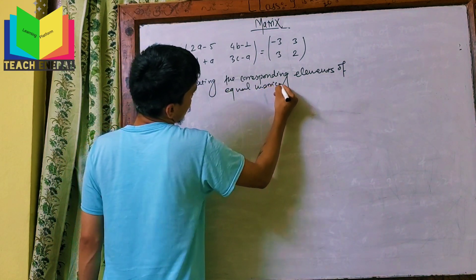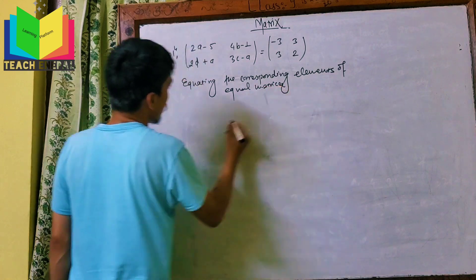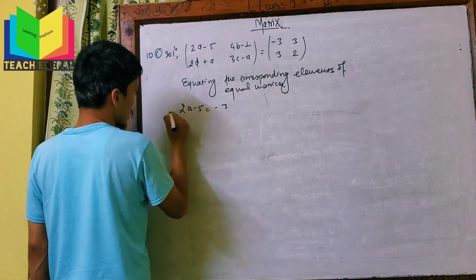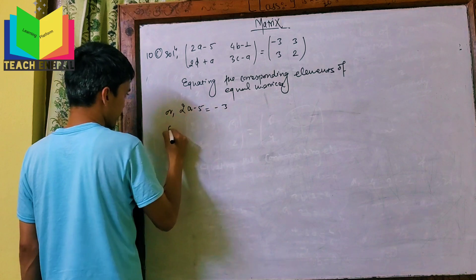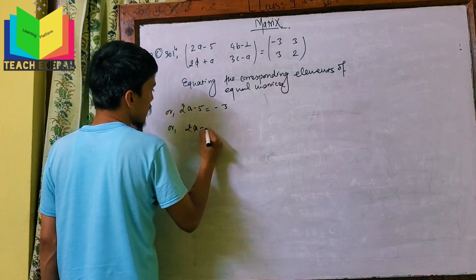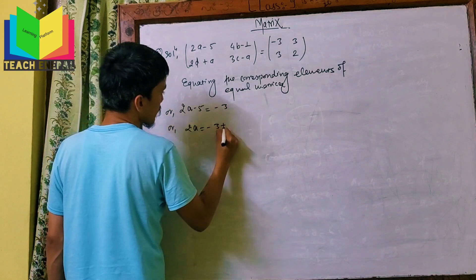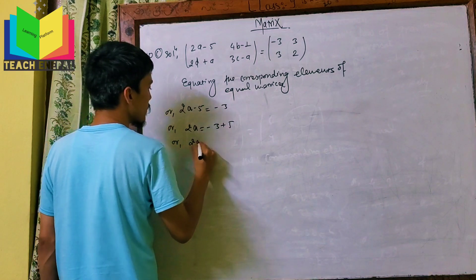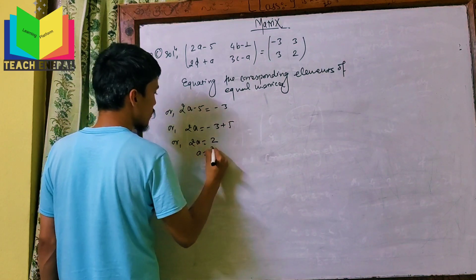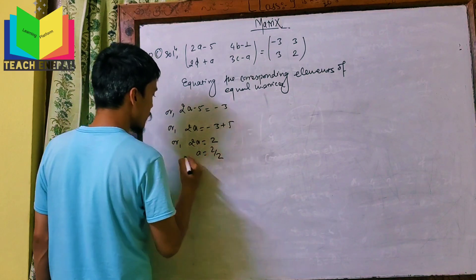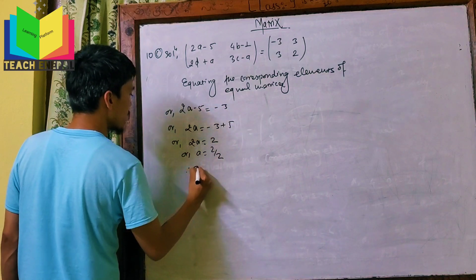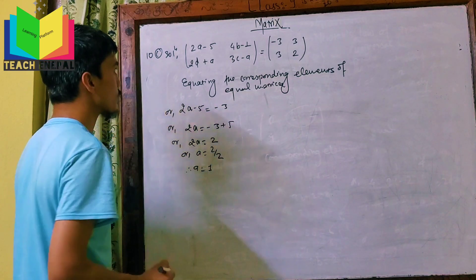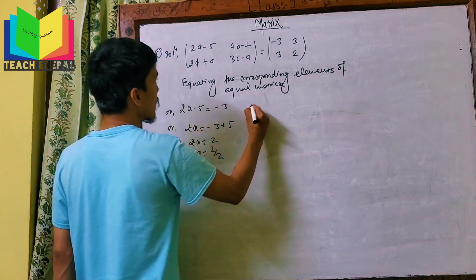From 2A-5 equals minus 3: 2A equals minus 3 plus 5, so 2A equals 2, therefore A equals 1.